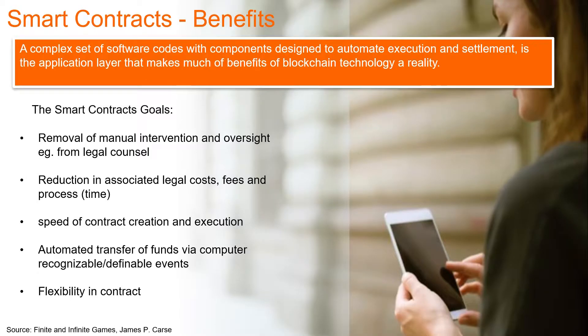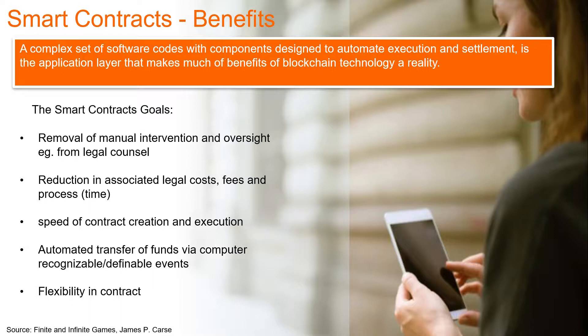We need to define the terms and conditions from a legal perspective and define them in the source code. The goals of the smart contract include: elimination of manual intervention by lawyers and legal departments, reduction of cost, and speed. As you know, a contract signed between legal departments can take more than six months, so with the smart contract we eliminate this time. We also have automated transfer of funds and flexibility for smart services.